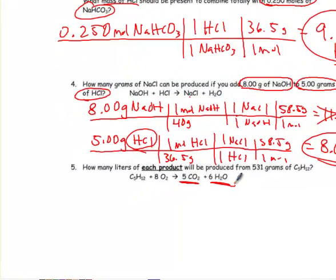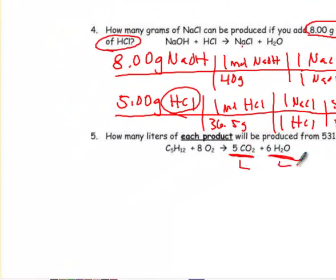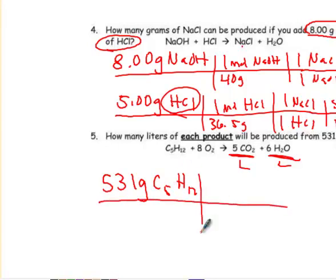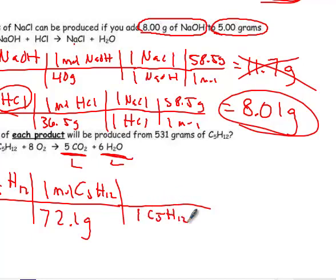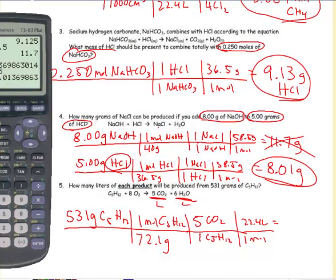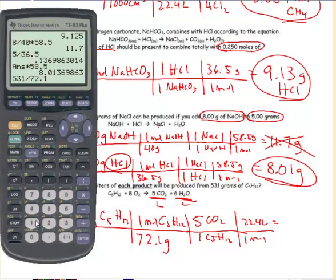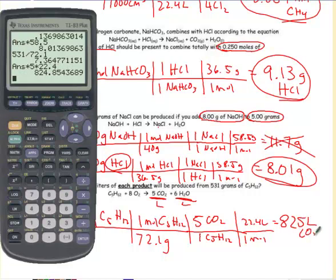All right, how many liters of each product? Well, these are the products. These are the reactants, so I want to know how many liters of both carbon dioxide and of water from 531 grams of C₅H₁₂. So, C₅H₁₂, I need the molar mass, so I have 5, 12 times 5. We have 60 plus 12.12 is 72.12. So, there are 72.1 grams and 1 mole of C₅H₁₂. The ratio is 1 C₅H₁₂. I'll do the carbon dioxide first to 5 CO₂s, and then I want liters. So, I'm assuming this is at STP because we don't know how to convert when it's not. So, I get 531 divided by 72.1 times 5 times 22.4. So, I am going to make 825 liters of carbon dioxide in this reaction.